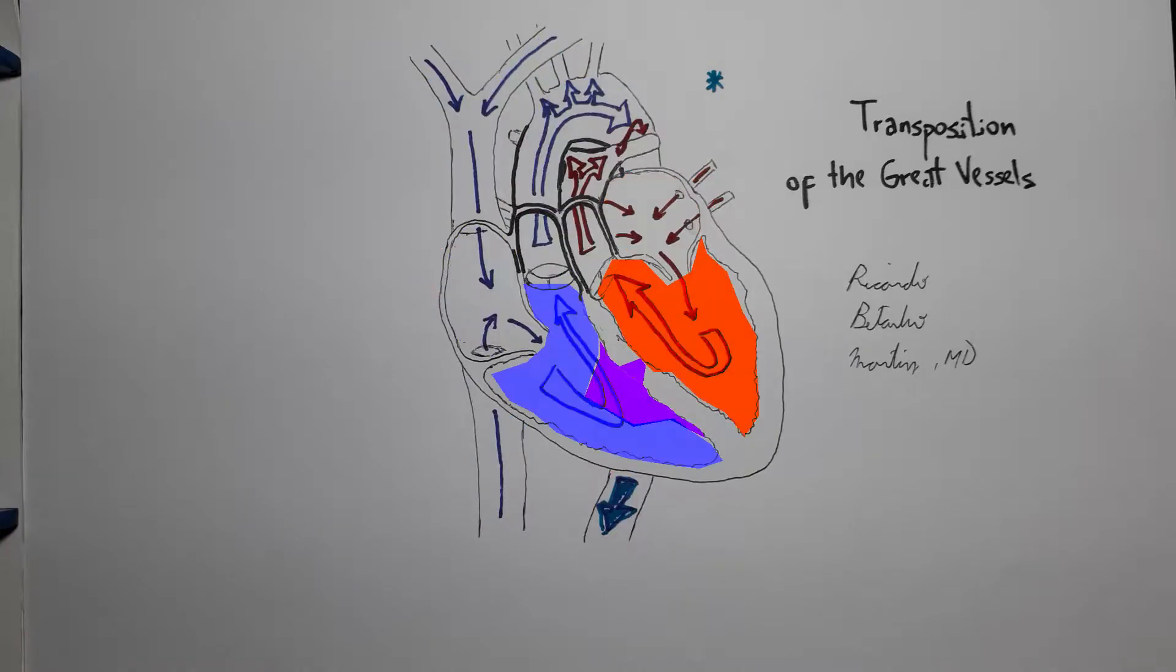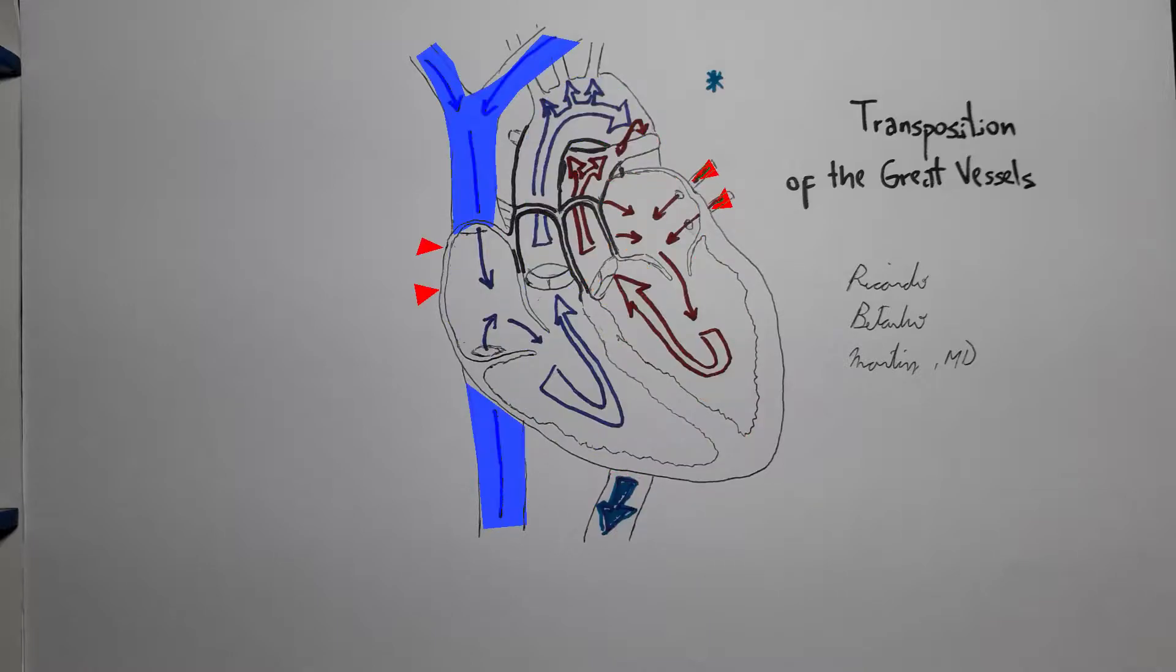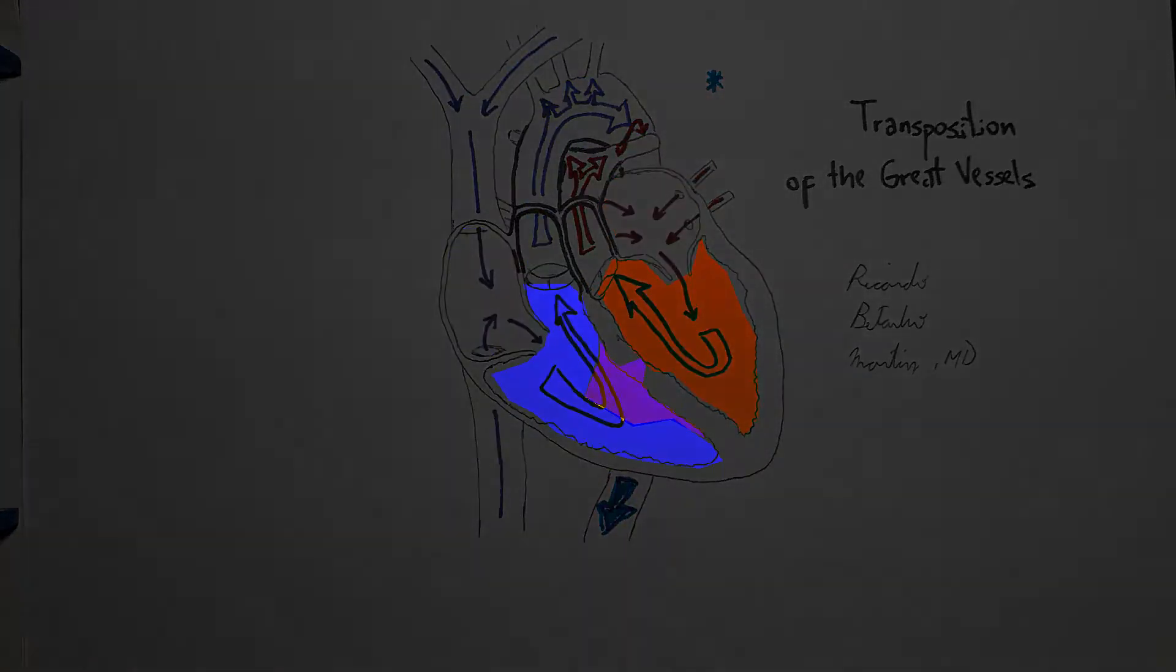Transposition of the great vessels, or dextrotransposition of the great arteries, simply D-transposition, is one of the most severe cyanotic heart diseases seen somewhat routinely in clinical practice.